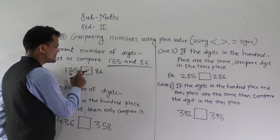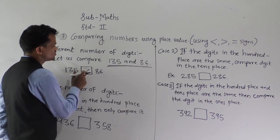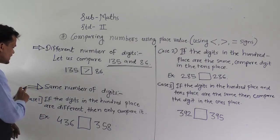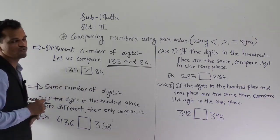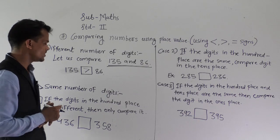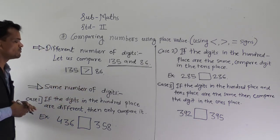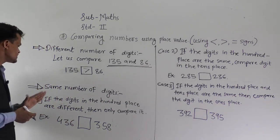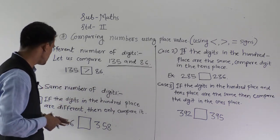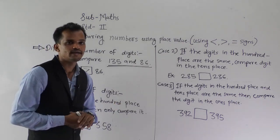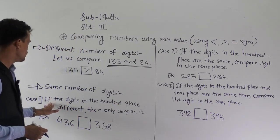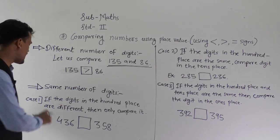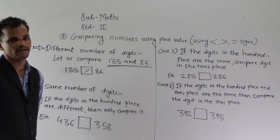Remember, the open side of this symbol or sign should face the greater number. The next case is same number of digits. If the digits in the 100s place are different, then only compare those digits.